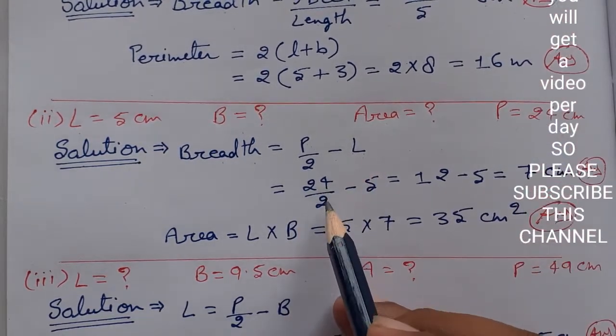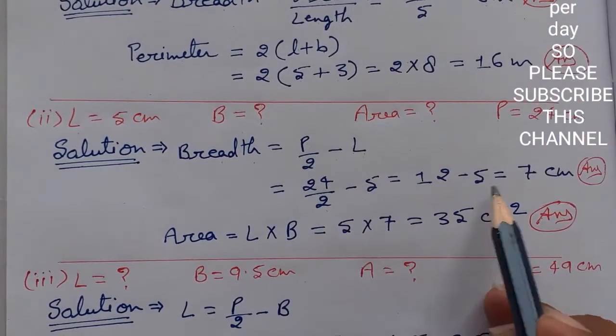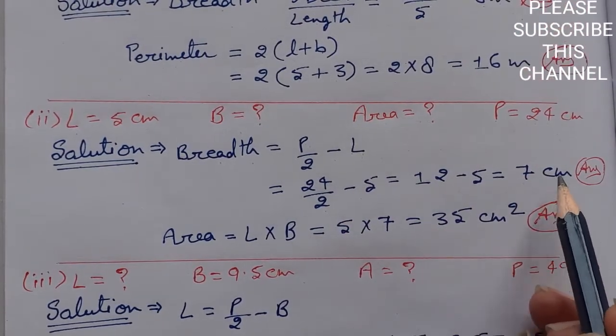So perimeter upon 2, that will be 24 upon 2 minus 5, 12 minus 5, exactly we will get 7cm.